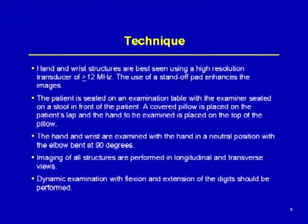For scanning the patient's hand and wrist, I like to have the patient seated on the table, and I like to use a high-frequency transducer of at least 12 megahertz. In some cases, you may use a standoff pad, which will enhance the images, particularly around the bony structures of the knuckles. The patient is seated with the elbow flexed 90 degrees, and I like to have the patient rest their hand on a small pillow that we can easily rotate from the palmar or the dorsal surface. Imaging structures should be obtained longitudinal and transverse for all views, and dynamic examinations help out, particularly with evaluating tendons from nerves and looking for other areas of pathology.